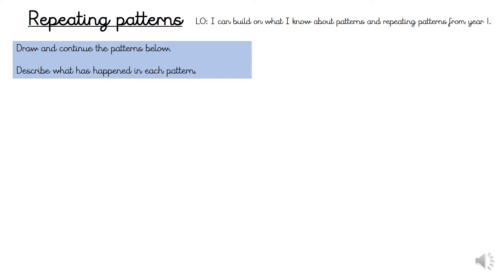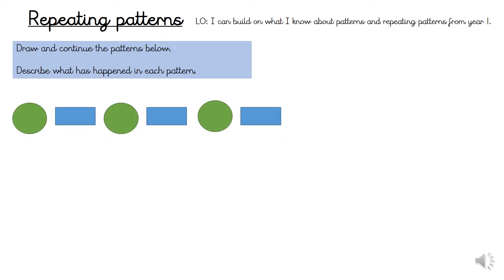Let's start by looking at some repeating patterns. Can you use the shape names to describe this pattern? Circle, rectangle, circle, rectangle, circle, rectangle. Pause the video and have a go at drawing this repeating pattern and the next three shapes in the sequence.